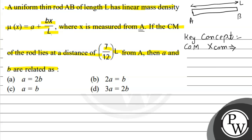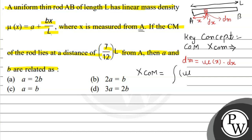Let's start the final solution. First, I'll consider a small element on this rod of length dx at a distance x from A. The small mass dm will be equal to the linear mass density multiplied by the small distance dx. Using the conceptual formula, x_cm = ∫μ·dx·x / ∫μ·dx.